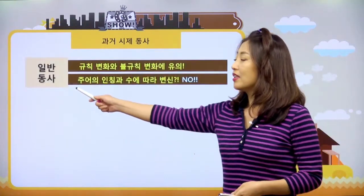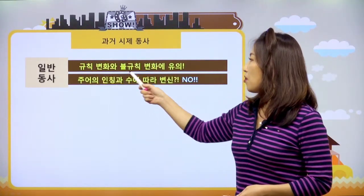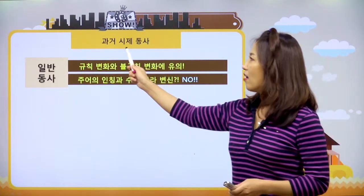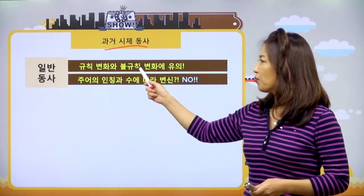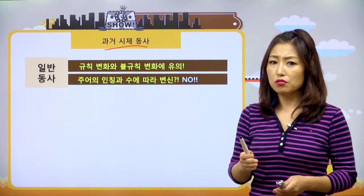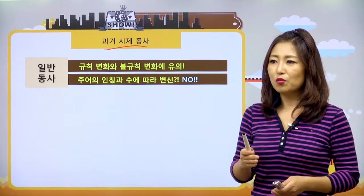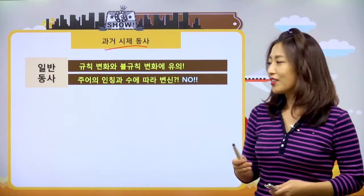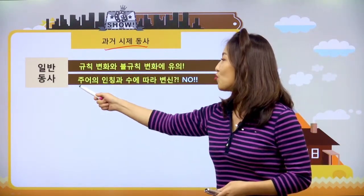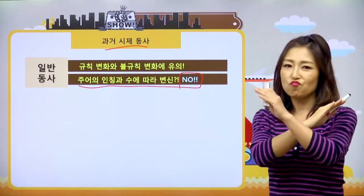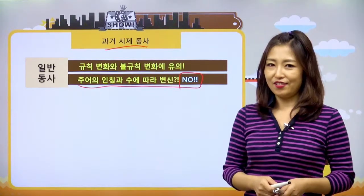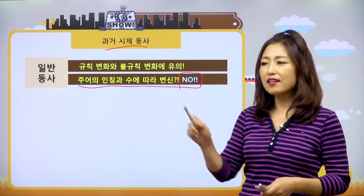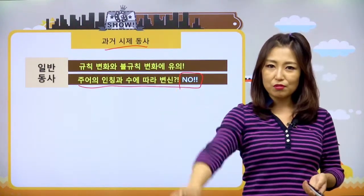이번엔 일반 동사예요. 규칙 변화와 불규칙 변화에 유의를 하라고 해요. 과거 시제 동사에 대해서 하고 있고 규칙 변화와 불규칙 변화가 있다는 건 동사가 변신한다는 얘기죠. 그러면 이 이야기는 곧 외워야 할 게 어마무시하게 많다는 거? 빙고. 일반 동사는 대신에 장점이 있어요. 주어의 인칭과 수에 따라 변신하지 않아요. 과거는 그냥 과거니까요. 그냥 과거형만 딱 갖다 붙이면 되는 거예요.